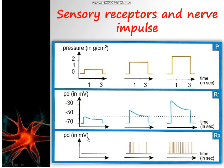When we apply a pressure of 0.8 gram per centimeter square, the receptor potential increases but does not reach the threshold of depolarization of the receptor. In this case, the receptor is unable to generate any action potential.